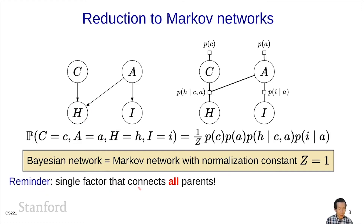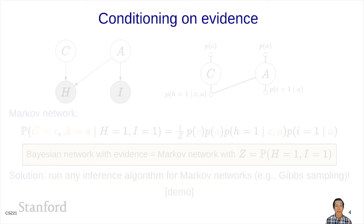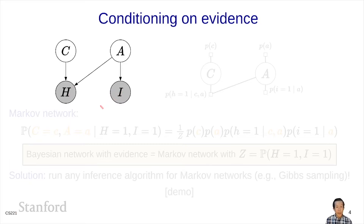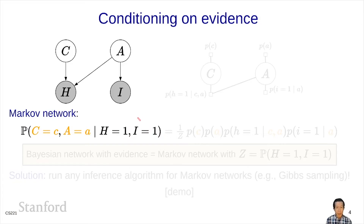Note that a single factor connects all the parents: there are two edges, c to h and a to h, but in the factor graph representation you connect the parents and the child into one factor. Now, one thing is missing — often in Bayesian networks you want to condition on evidence. So let's condition on h and i. To do this, we define a Markov network over the non-conditioned variables c and a, conditioned on h equals 1 and i equals 1. We substitute the values of the evidence into the factors themselves.